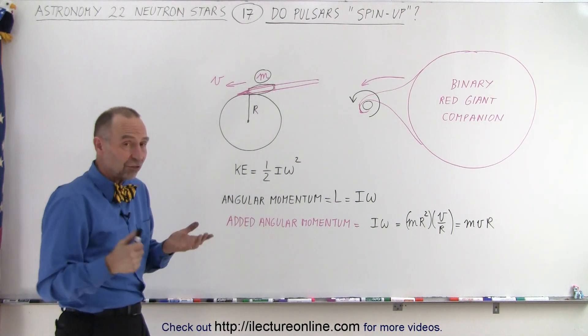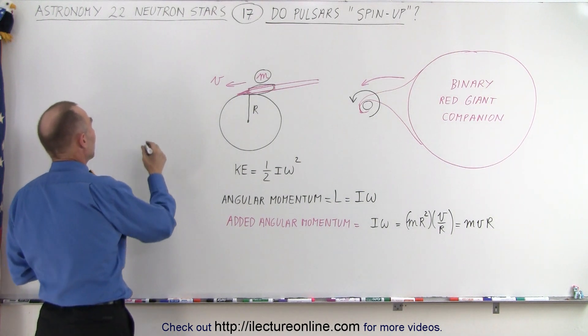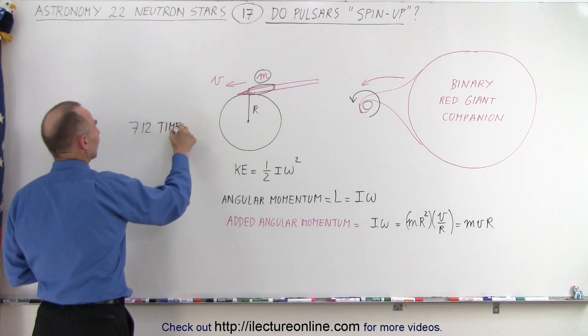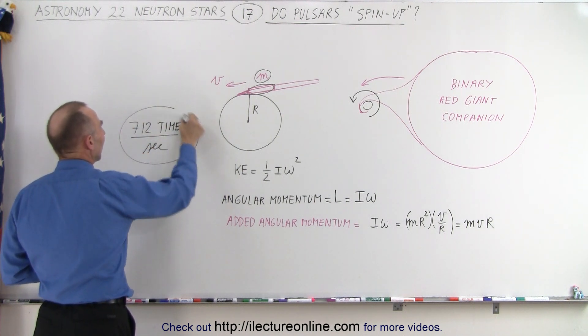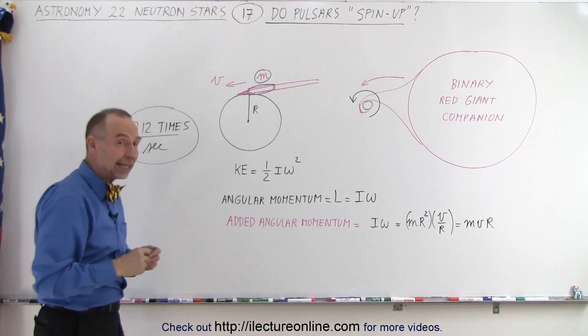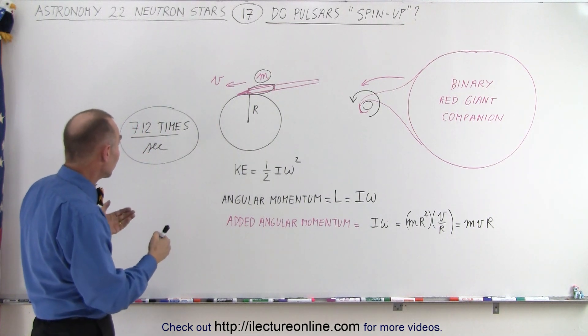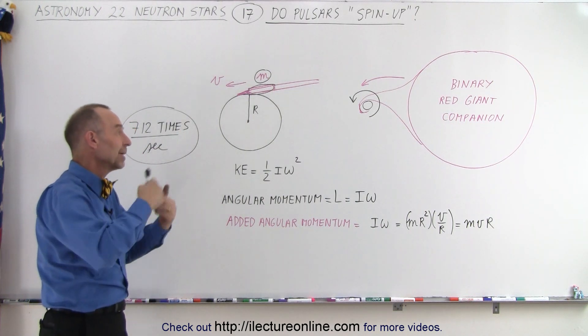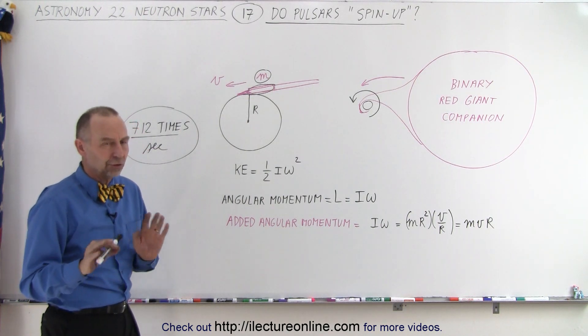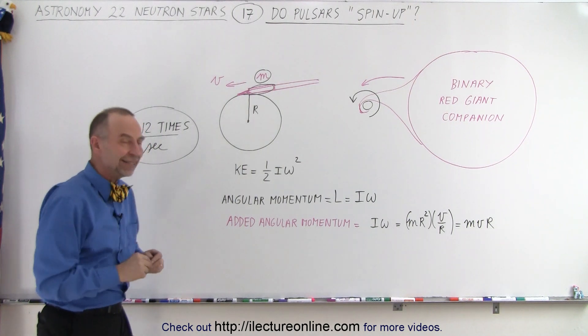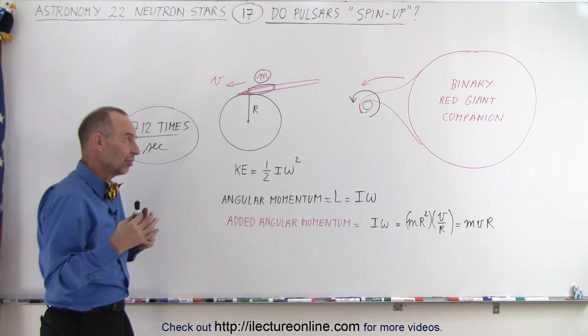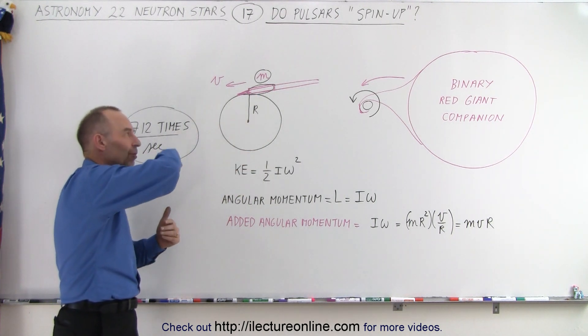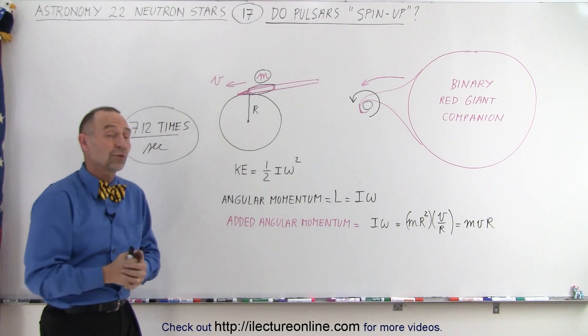And so we have the fastest known pulsar right now is a pulsar that spins 712 times per second. So that's the fastest pulsar that we've seen to date, and it's very likely that the reason why this pulsar has reached those kind of rotational speeds is because of potential add-on material that made it go faster and faster. So this is the process by which we get what we call the millisecond type of pulsars that speed up because of the deposited material causing it to go faster if it's deposited in the same direction as the rotation of the pulsar.